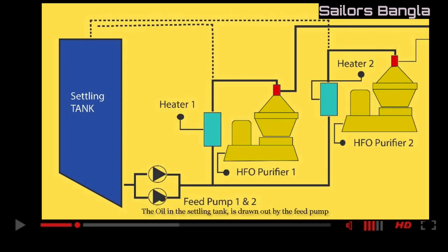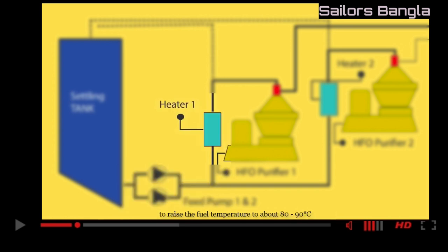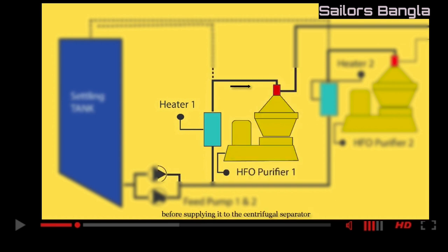The oil in the settling tank is drawn out by the feed pump, which delivers the fuel to a thermostatically controlled heater to raise the fuel temperature to about 80 to 90 degrees Celsius before supplying it to the centrifugal separator.